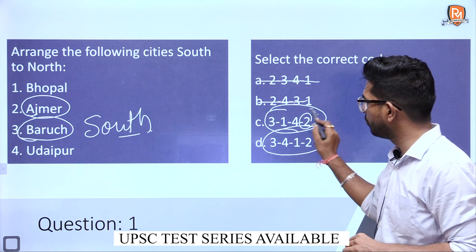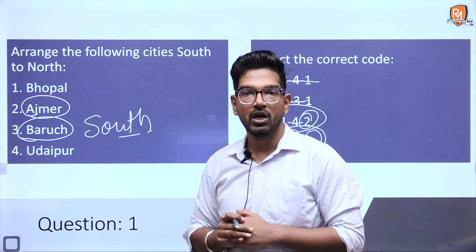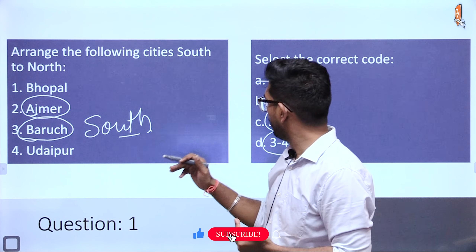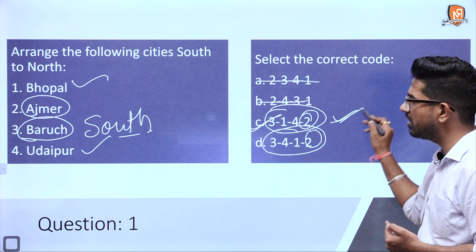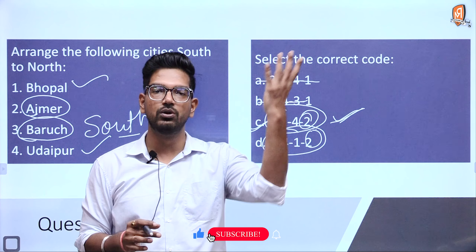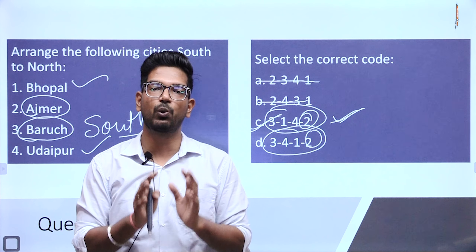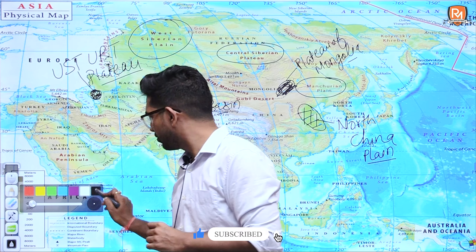Let us see the kind of question which you can get in your exam. The question says: arrange the following cities south to north. The key word is you have to arrange south to north — the southernmost city will be on top and the northernmost city will be at the bottom. We will be having cities like Bhopal, Ajmer, Baruch, and Udaipur. These 4 cities are given and you have to arrange them south to north. You have 30 seconds — you can write your answer in the comment box. This kind of question has appeared many times in UPSC. That is why it is important for you to attempt such questions. Generally, these topics are not covered in regular map classes — they are most of the time covered from current affairs.